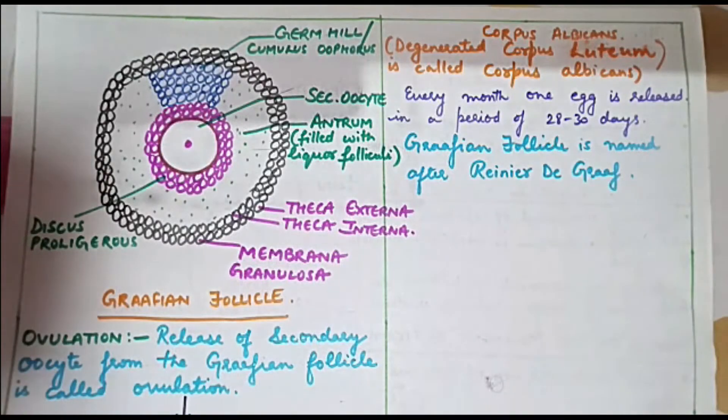In this video we will discuss the structure of the Graafian follicle. Now we know that in the transverse section of an ovary we saw primary follicles, secondary follicles which were in their stage of development.